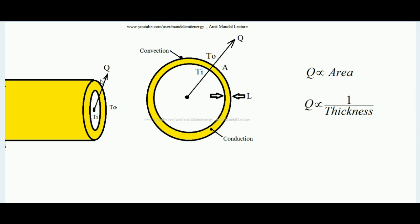When we apply insulation, we want to reduce the heat transfer rate, but up to a particular thickness, the heat transfer rate first increases. Only when we cross that threshold does the heat transfer rate reduce. That thickness of insulation up to which the heat transfer rate increases and reaches its maximum is called the critical thickness of insulation.